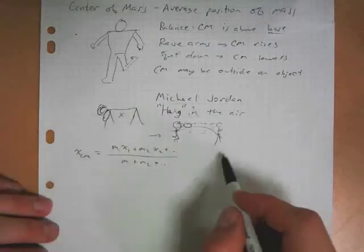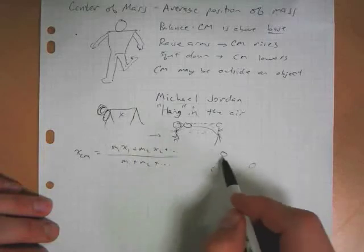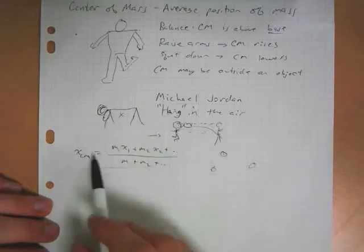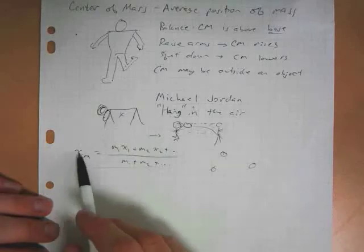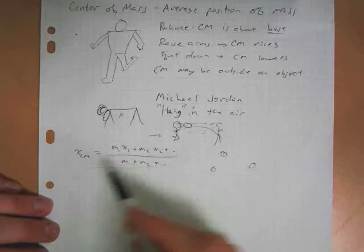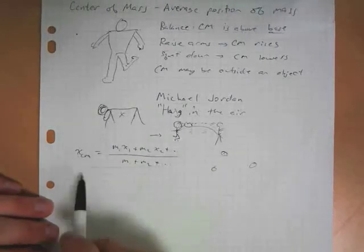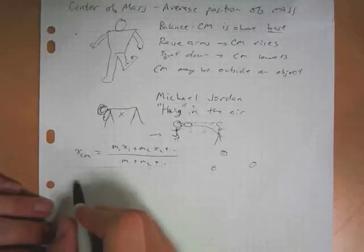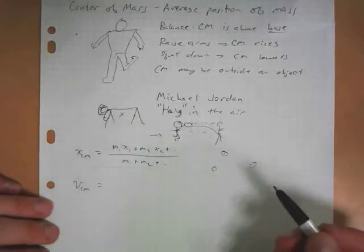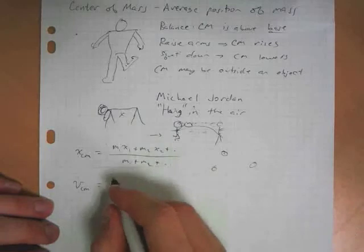We will only find center of mass of discrete collections of objects. Like we might have an object here and an object here and an object here and we'll calculate their center of mass using this formula. And you can do this for the y position of the center of mass or the z position of the center of mass. So you could do this for an arbitrary number of dimensions.